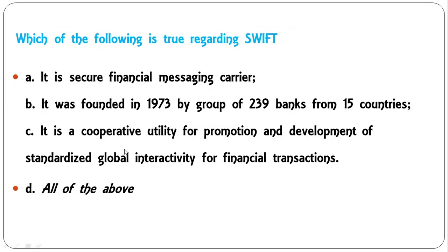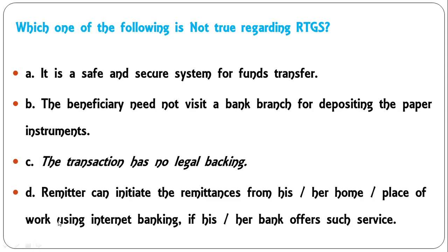Which of the following is true regarding SWIFT? The options are: it is a secure financial messaging carrier; it was founded in 1973 by a group of 239 banks from 15 countries; it is a cooperative utility for promotion and development of standardized global interactivity for financial transactions; or all of the above. All these statements regarding SWIFT are correct, so D (all of the above) is the correct answer.